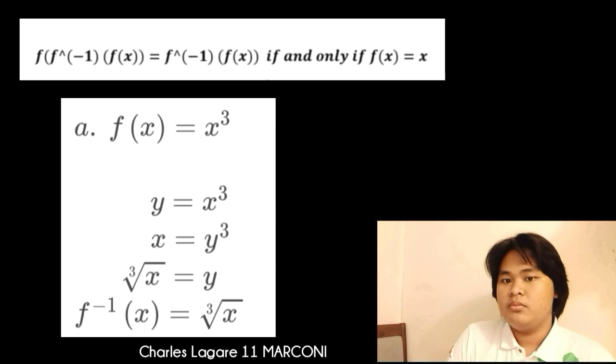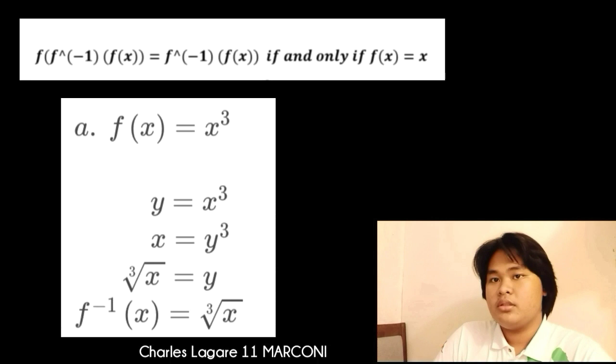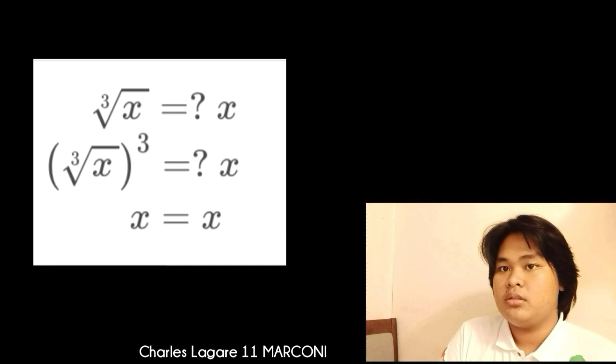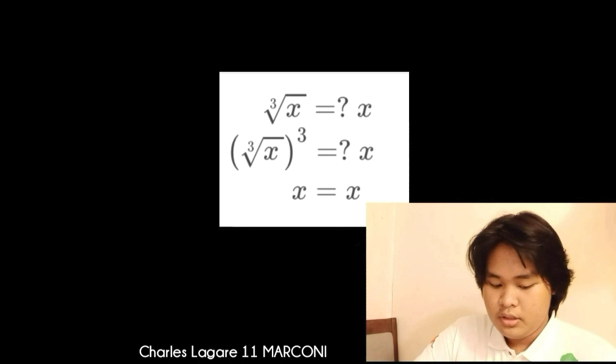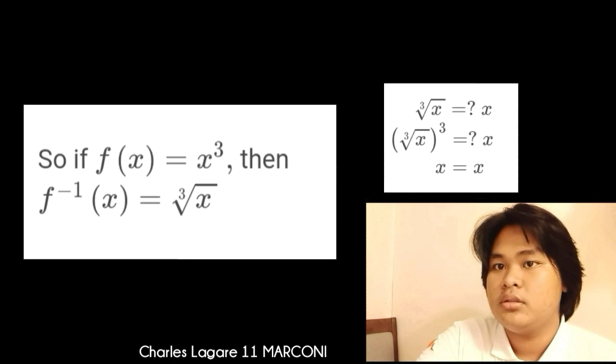For number seven, letter a: f of x equals x cubed. Replace f of x with y, then swap x and y so x equals y cubed. Take the cube root of both sides, so the inverse function of x equals the cube root of x. To verify this is the correct inverse, we substitute values: the cube root of x cubed equals x. Therefore, if f of x equals x cubed, then f inverse of x equals the cube root of x.